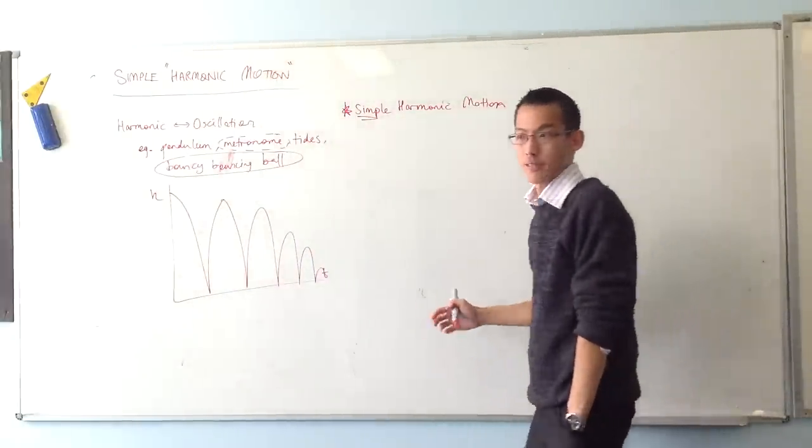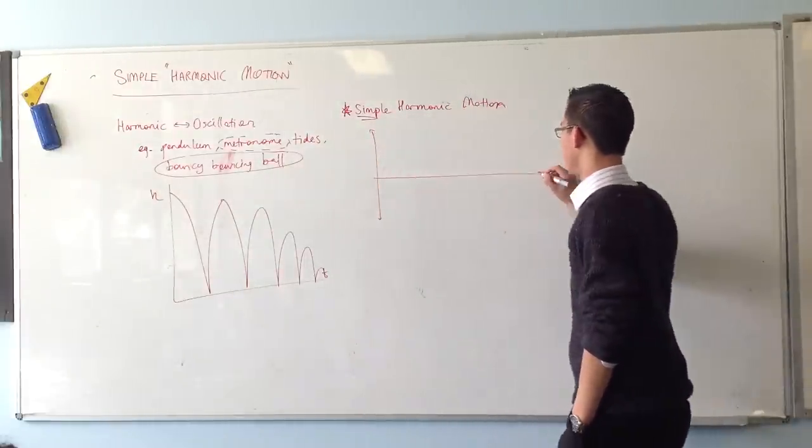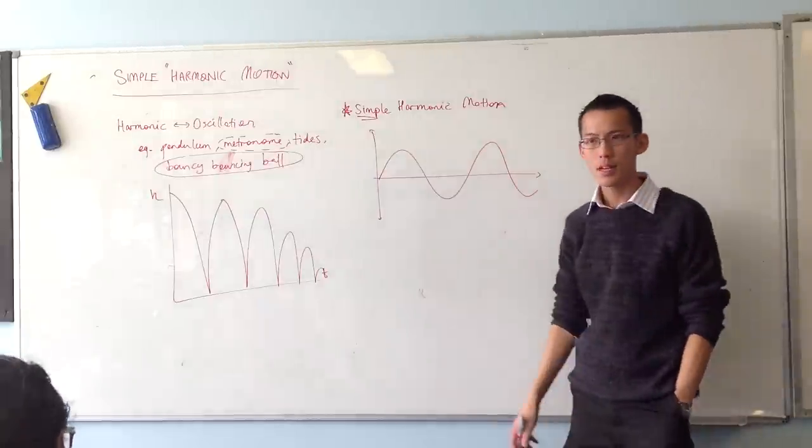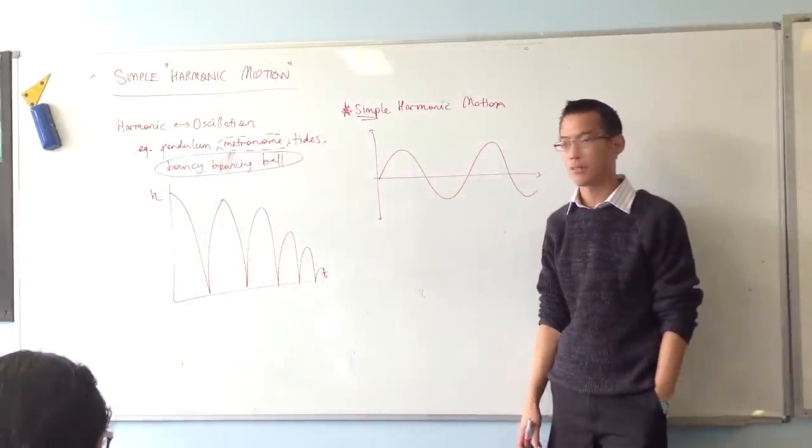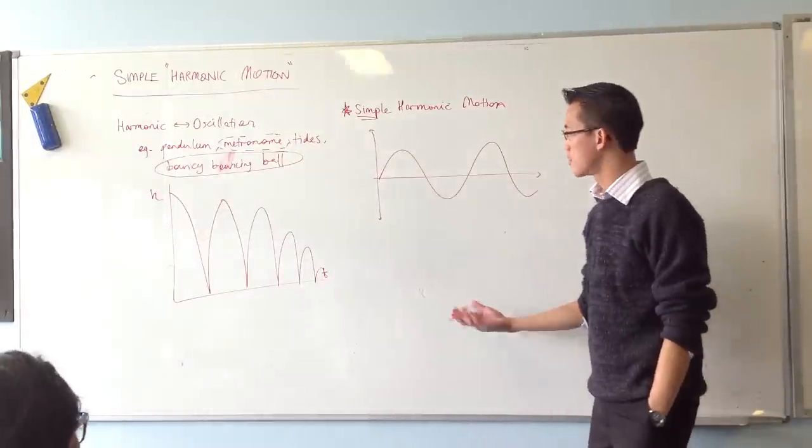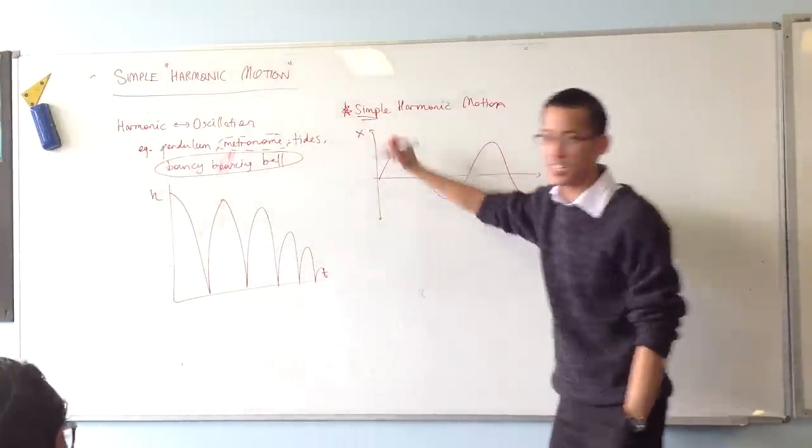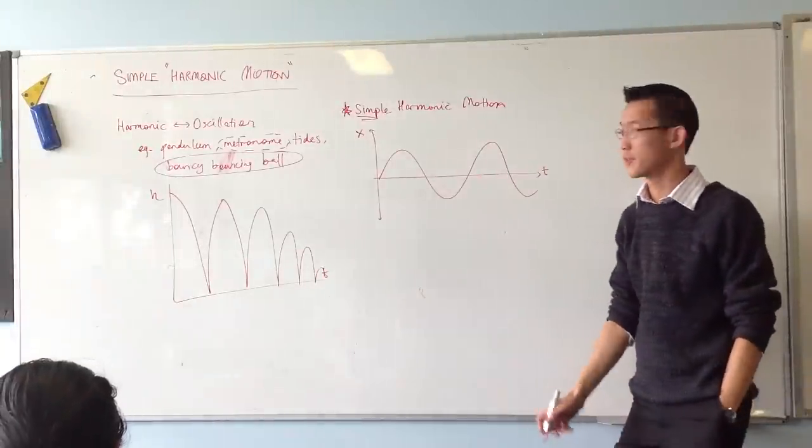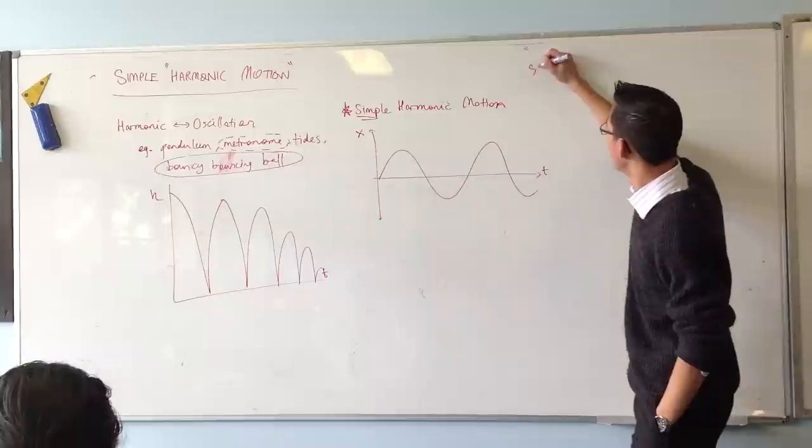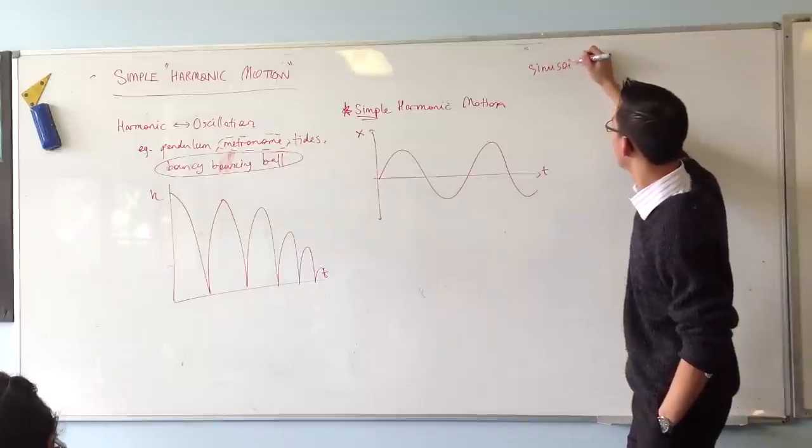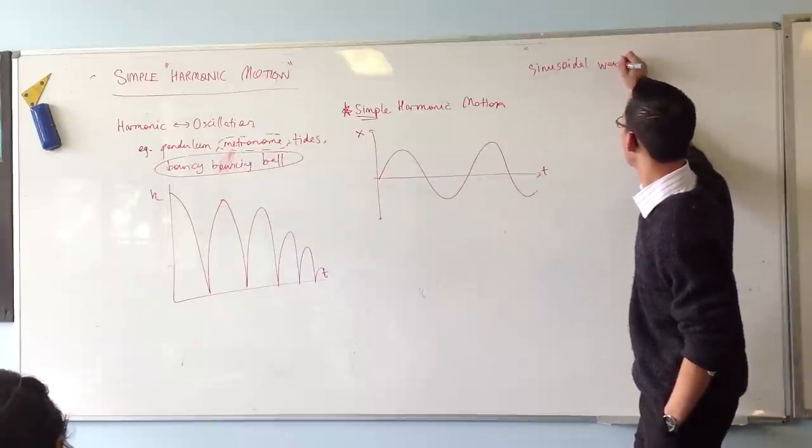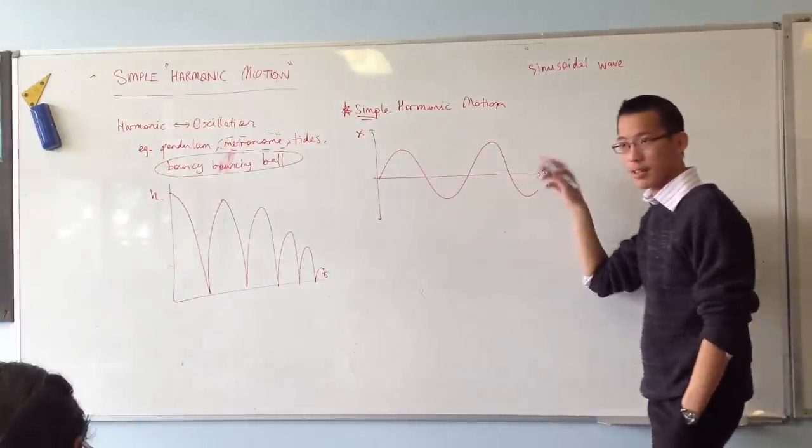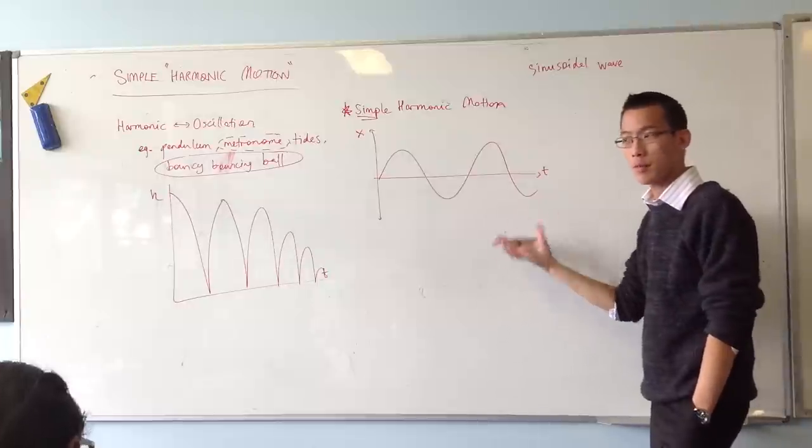Let's draw a sine curve. Just a regular old sine curve. So some things to know about this. If an object is moving, and its displacement follows something like the sine curve. This kind of shape we call a sinusoidal wave, which is where we get sine from. If it's doing this, that's what we call simple harmonic motion.